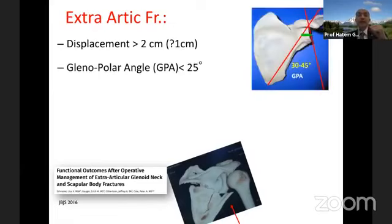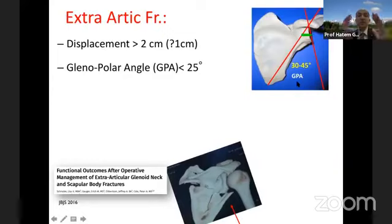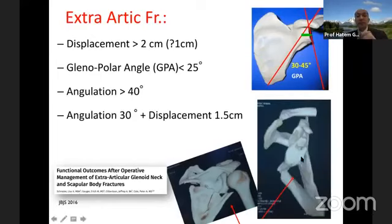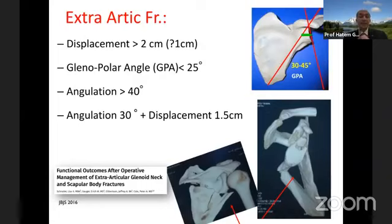The glenopolar angle is very important — it is the angle between the glenoid and a line from the apex of the acromion to the inferior angle of the scapula. Normally it is 30 to 45 degrees. If it is reduced to less than 25 degrees, that leads to disadvantage of the working muscles and poorer shoulder function. An angulation in the axial view of more than 40 degrees, or 30 degrees angulation plus about 1.5cm displacement as stated by Peter Cole, is an indication for surgery.